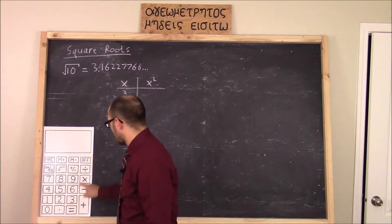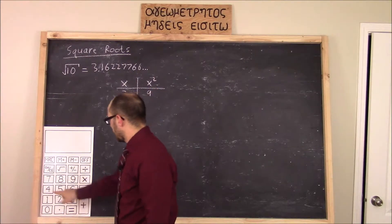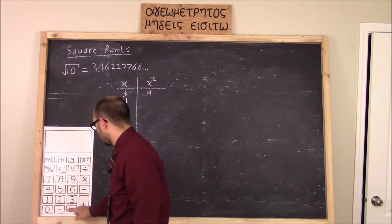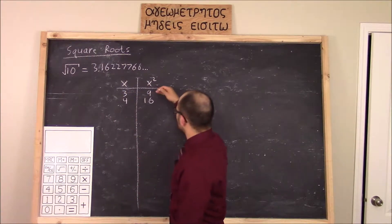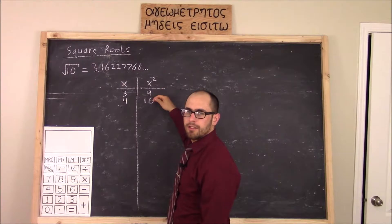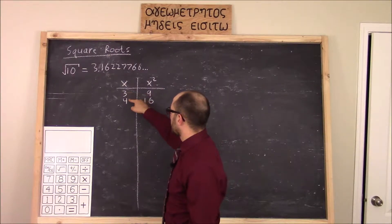3 squared is simply 3 times 3 equals 9. Likewise, 4 times 4 is equal to 16. We notice that 10 is between 9 and 16. So x must be somewhere between 3 and 4.